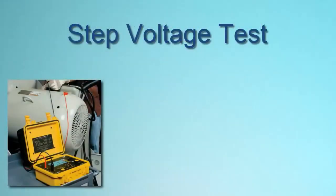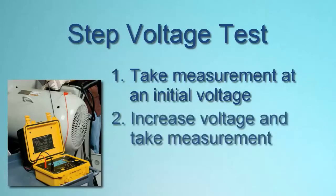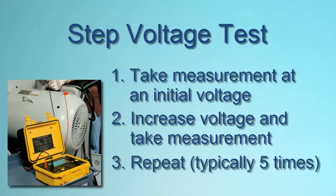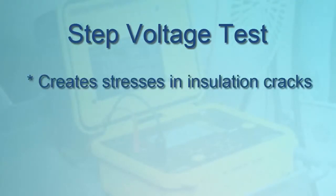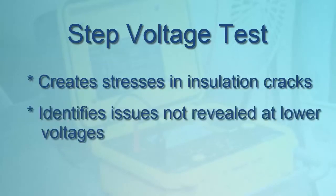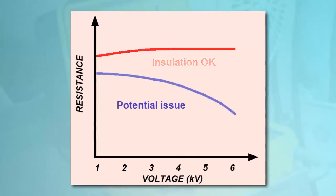A third method is the step voltage test. This involves testing at two or more test voltages and comparing the results. The test begins at an initial test voltage. At a specified interval, typically one minute, a measurement is recorded, after which the test voltage is increased — usually to five times the initial voltage. This process may be repeated through several steps, with measurements taken after one minute and the test voltage increased at a 5-to-1 ratio over the previous voltage. A common practice is to test at five voltage steps. The step voltage test is designed to create electrical stresses on internal insulation cracks, identifying potential problems that may not be revealed by testing at lower voltages. Insulation that is thoroughly dry, clean, and in good physical condition should provide roughly the same resistance measurement across the voltage range. If you observe a significant decrease in resistance at higher voltages, your insulation may be contaminated or deteriorating.